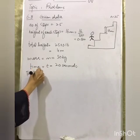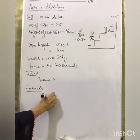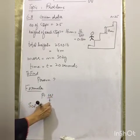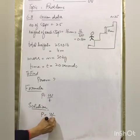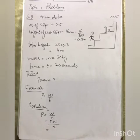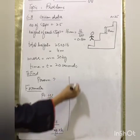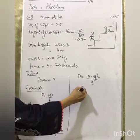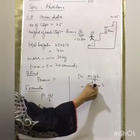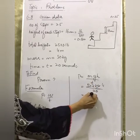To find power. Formula: power equals work done divided by time. Solution: work done divided by time. Force equals weight and weight equals mg, and displacement equals height h. So power equals mgh divided by time: 50 multiplied by 10 multiplied by 4 divided by 20. The answer is 100 watts.